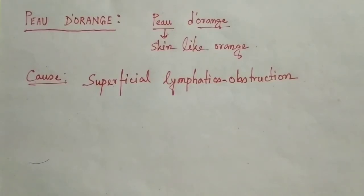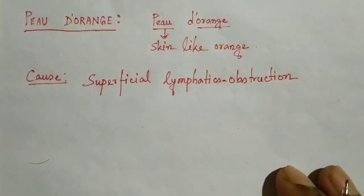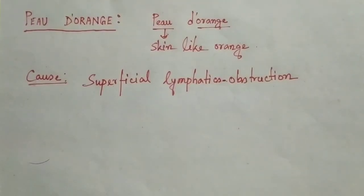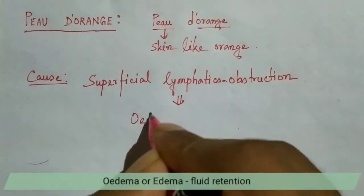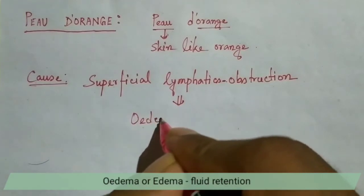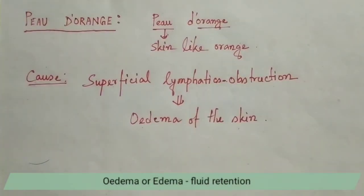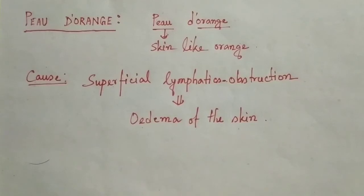The superficial lymphatics collect lymph from the skin over the breast. If obstruction of the superficial lymphatics occurs, then lymph cannot be collected from the skin of the breast, so edema of the skin will happen.